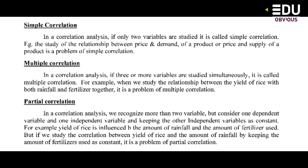What is partial correlation? In a correlation analysis, we recognize more than two variables, but only two variables are studied while keeping the other independent variables constant. For example, studying the relationship between yield of rice and amount of rainfall, by keeping the amount of fertilizers used as constant, is a problem of partial correlation.